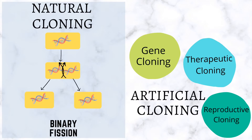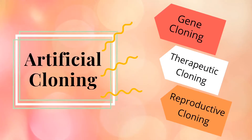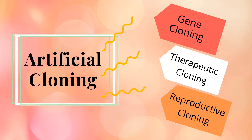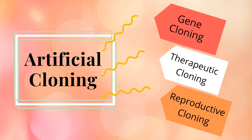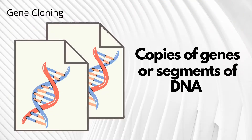There are three types of artificial cloning: gene cloning, therapeutic cloning, and reproductive cloning. Gene cloning, also called molecular cloning, refers to the cloning of genes — producing copies of genes or segments of DNA.